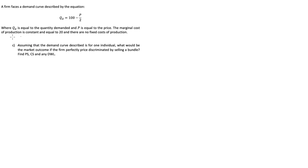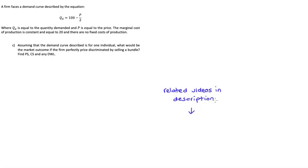Hi everyone. In this video, I'm going to go through a practice problem about perfect or first-degree price discrimination when we sell a bundle. This is actually part of a larger question about perfect price discrimination more generally — we're at part C now. I'll link to parts A and B in the description below, and I also have a video on the theory behind price discrimination and perfect price discrimination. All of those links are in the description.